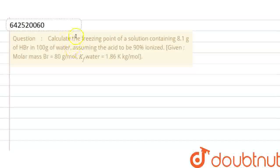Hello everyone! The question is: calculate the freezing point of a solution containing 8.1 grams of HBr in 100 grams of water, assuming the acid is 90% ionized. In this question, we have to find out the freezing point of the solution.